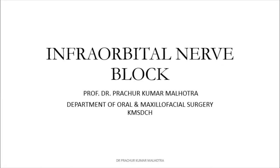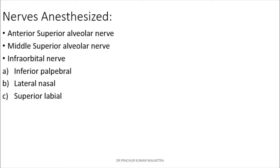In this lecture you will be informed about the infraorbital nerve block, which you will be using in your oral surgery posting for doing minor oral surgical procedures. The nerves anesthetized for this nerve block are the superior alveolar nerve, middle superior alveolar nerve, and the infraorbital nerve branches — that is, the inferior palpebral, lateral nasal, and superior labial.